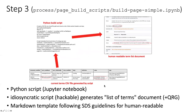The third step is to generate the human-readable documents. There is a Python script again in the form of a Jupyter notebook. This is kind of a template script that's hackable. It generates a list of terms document. There's also a script that is used by Darwin Core to generate the quick reference guide. This ensures that whatever is in the original table is reproduced in every different form. The markdown template for the human-readable documents follows the SDS guidelines, so it automatically turns it into the form that the SDS requires.